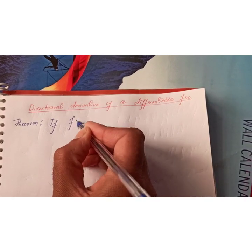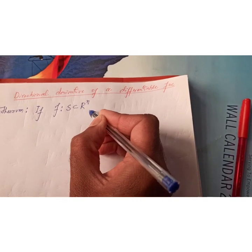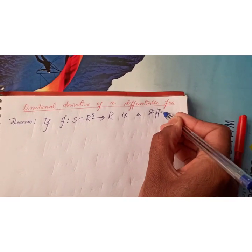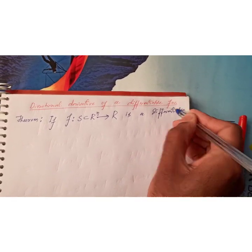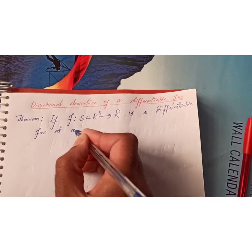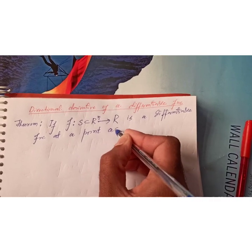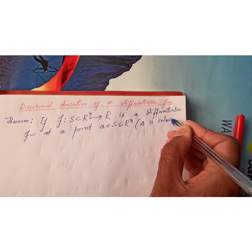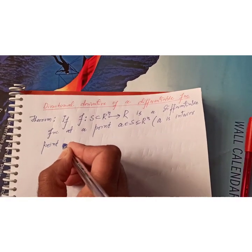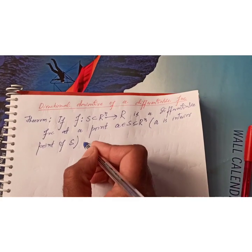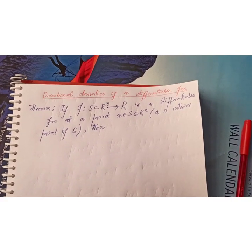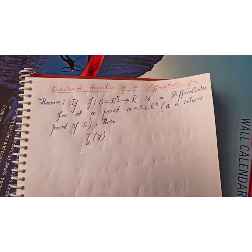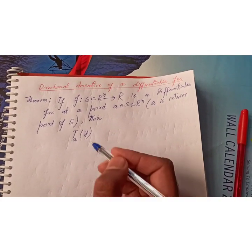If f from S contained in R^n to R is a differentiable function at a point a belonging to S, where a is an interior point of S, then the total derivative of f — which we denote by T_a, a linear transformation — is defined at a.